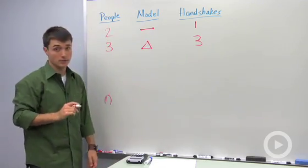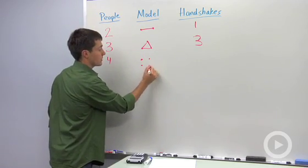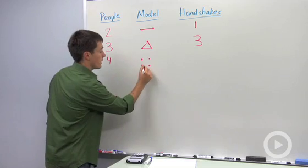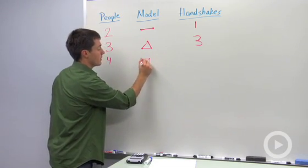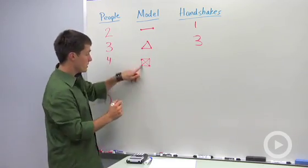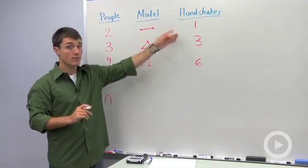If you have four people, you're going to have four dots, which represent the four people at that party, and you're going to have four handshakes, but you're also going to have two more. So we've got one, three, a total of six. So I'm noticing that we don't have a linear function here.